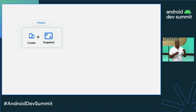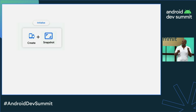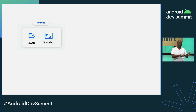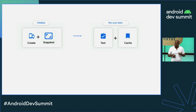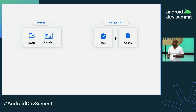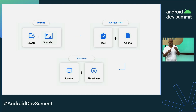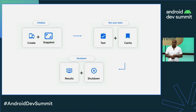In the initialization phase, it creates the devices you ask for, including downloading SDK components as required. It creates a zero state snapshot that it can then snap the devices back to between test runs for more consistent test results. Then as it's running your tests across those devices in parallel, it's also generating a test cache so it can automatically skip tests that don't need to run again. Finally, it tears down your devices, releasing resources back to your workstation, and generates the test artifact that you can open in a browser or Android Studio.